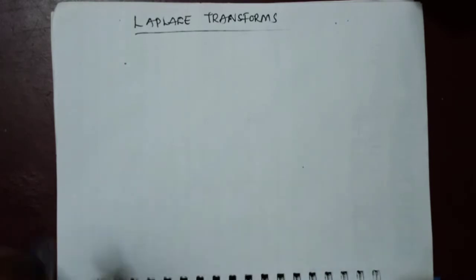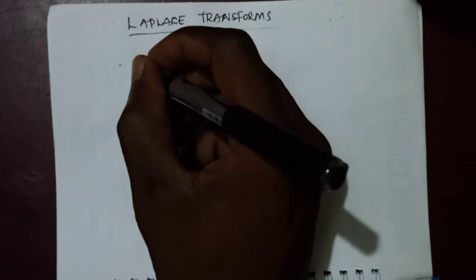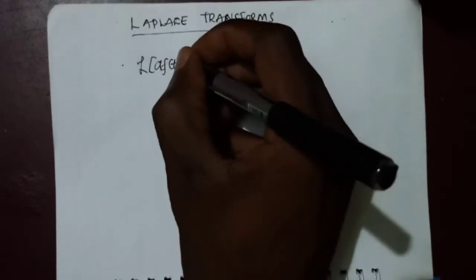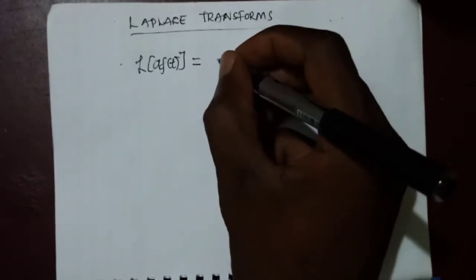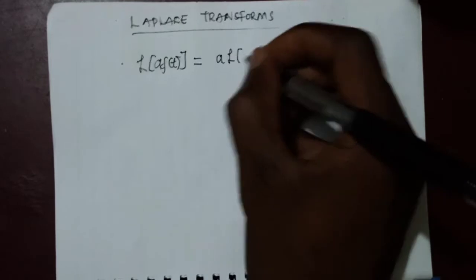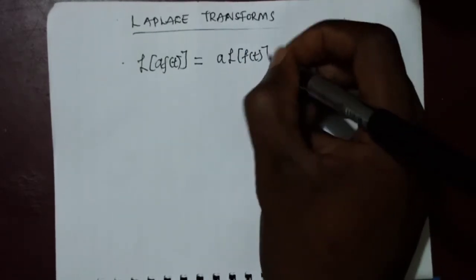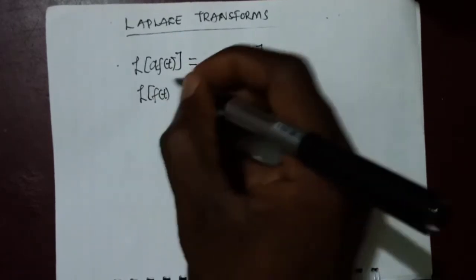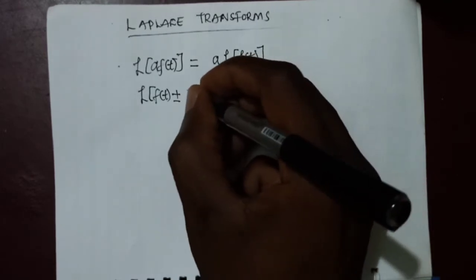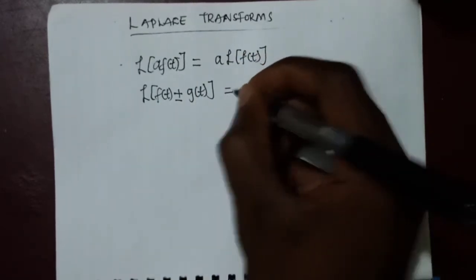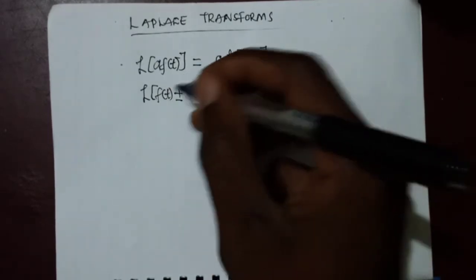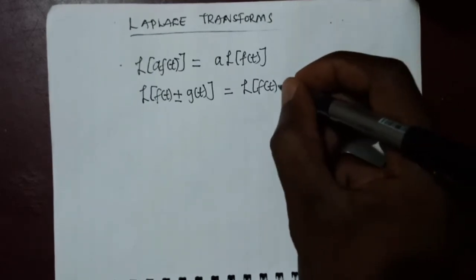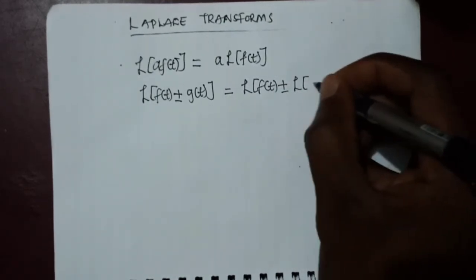Before we dive in, there is something very important I want you to know. The Laplace transform of a constant A multiplied by a function f(t) is the same as the constant multiplied by the Laplace transform of f(t). Also, the Laplace transform of f(t) plus or minus g(t) is the same as finding the Laplace transform of each function separately: L{f(t)} ± L{g(t)}.